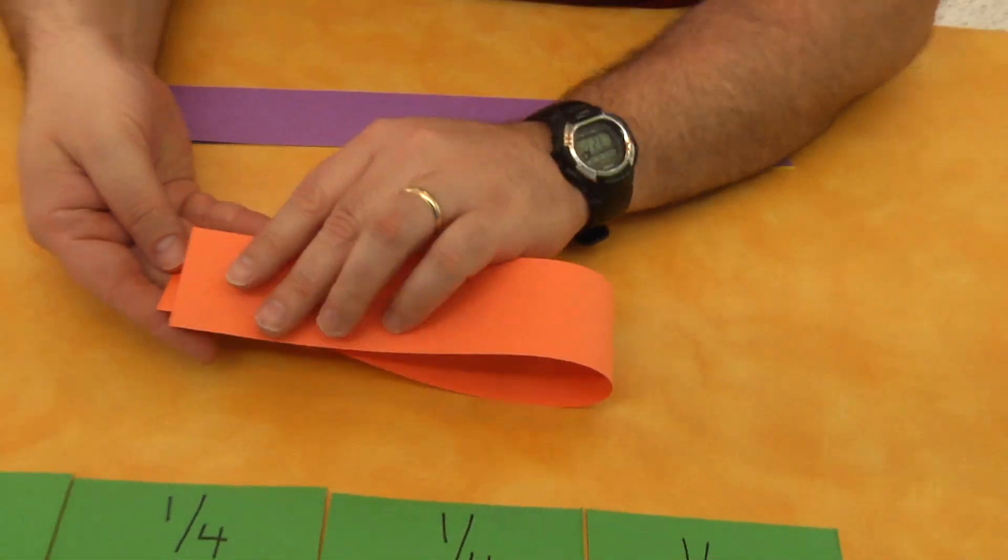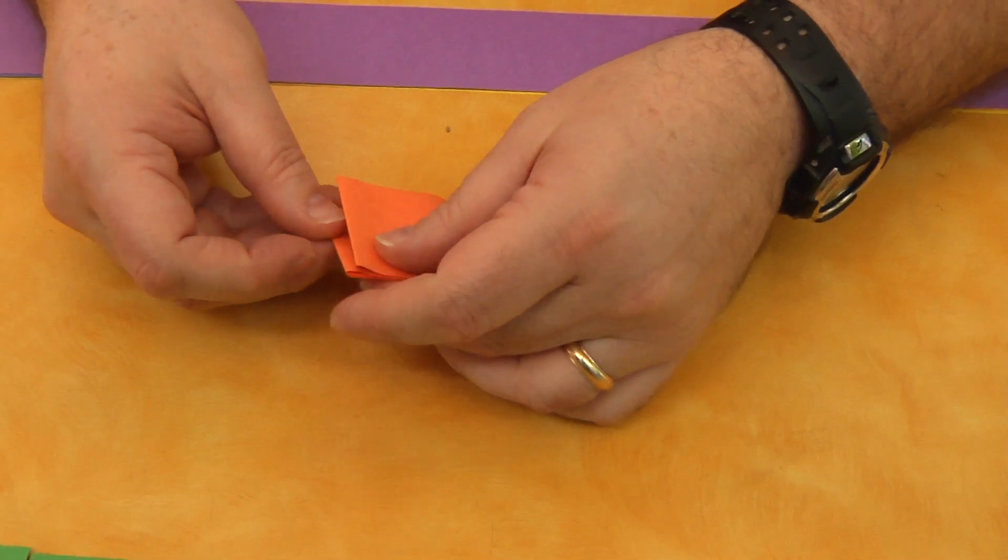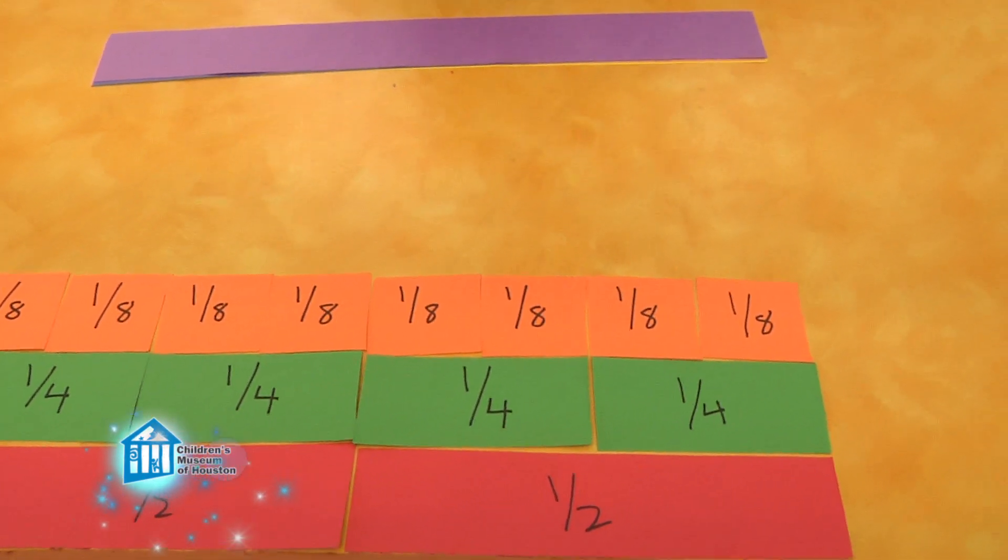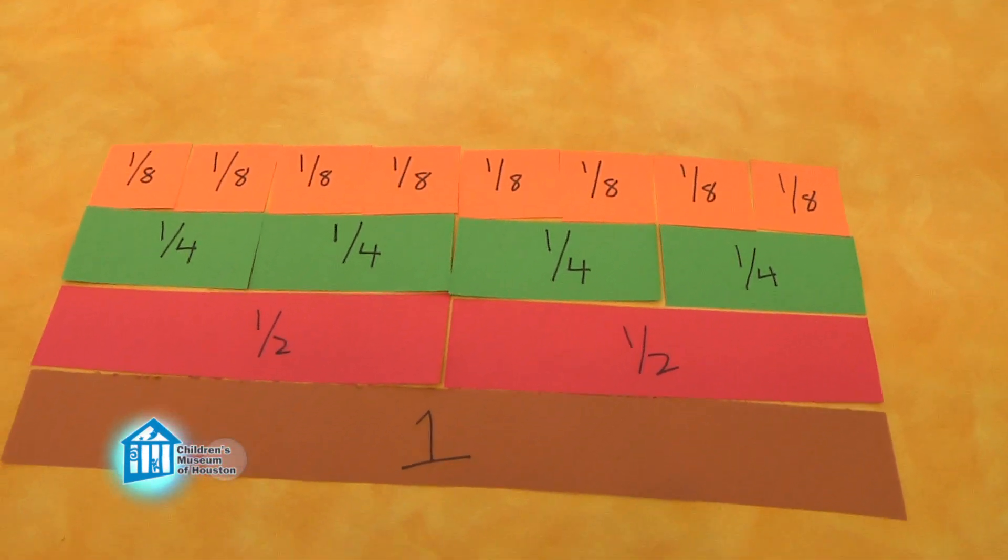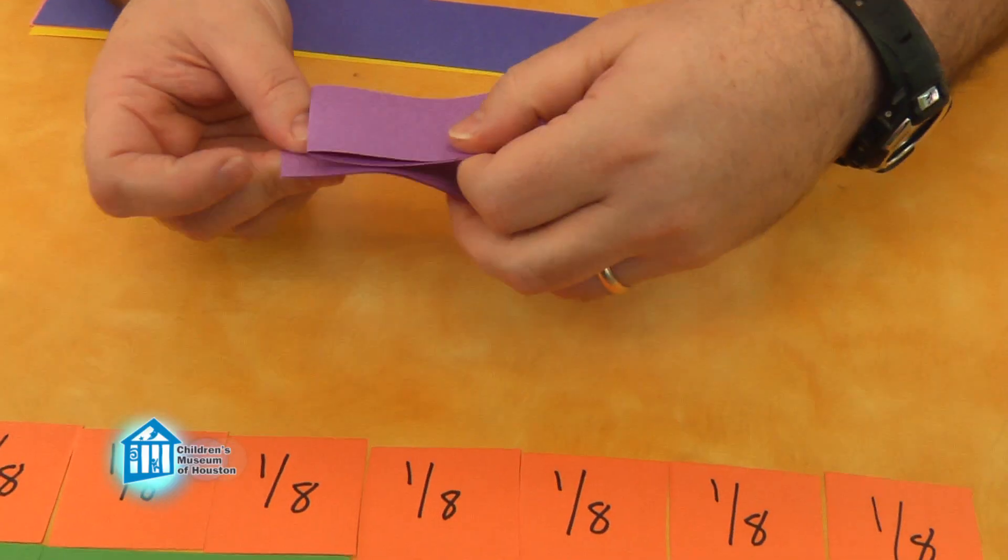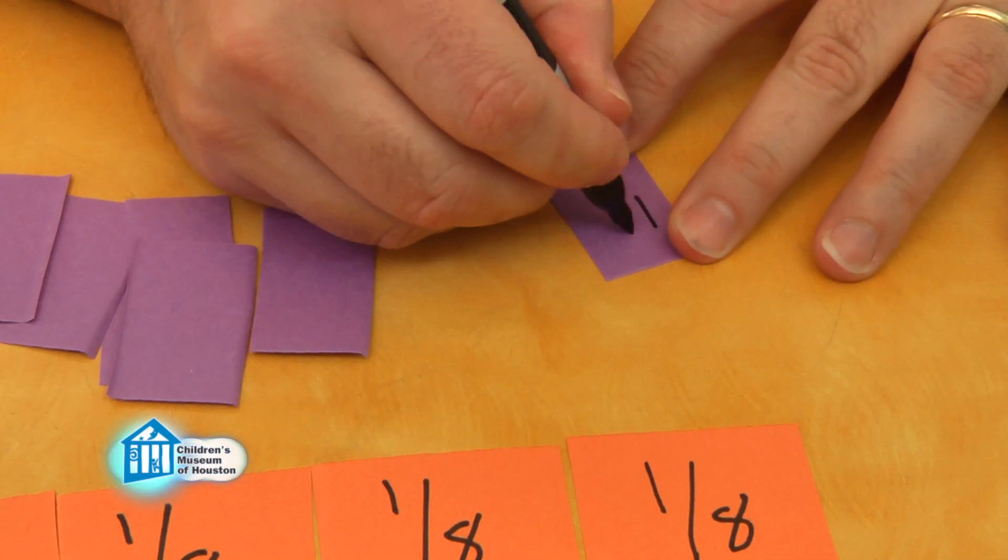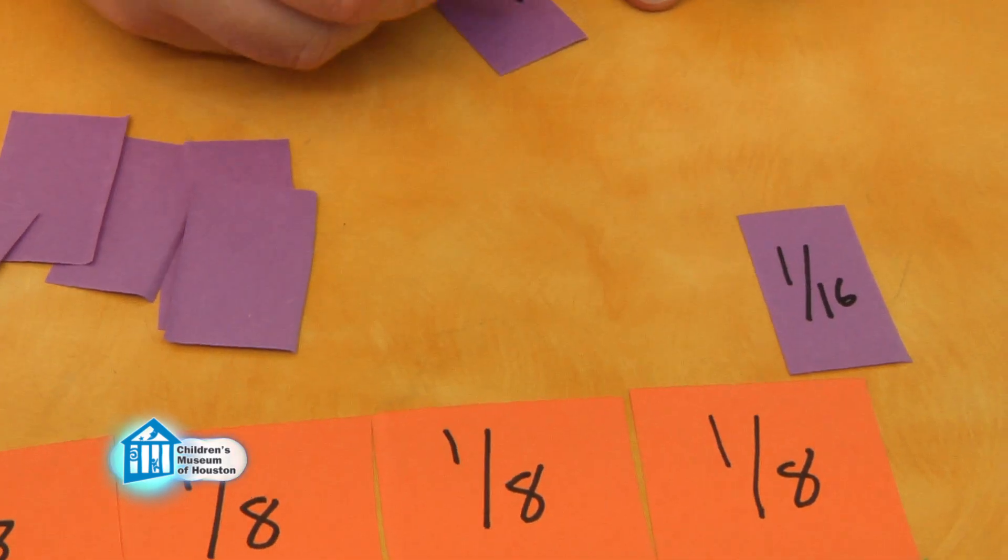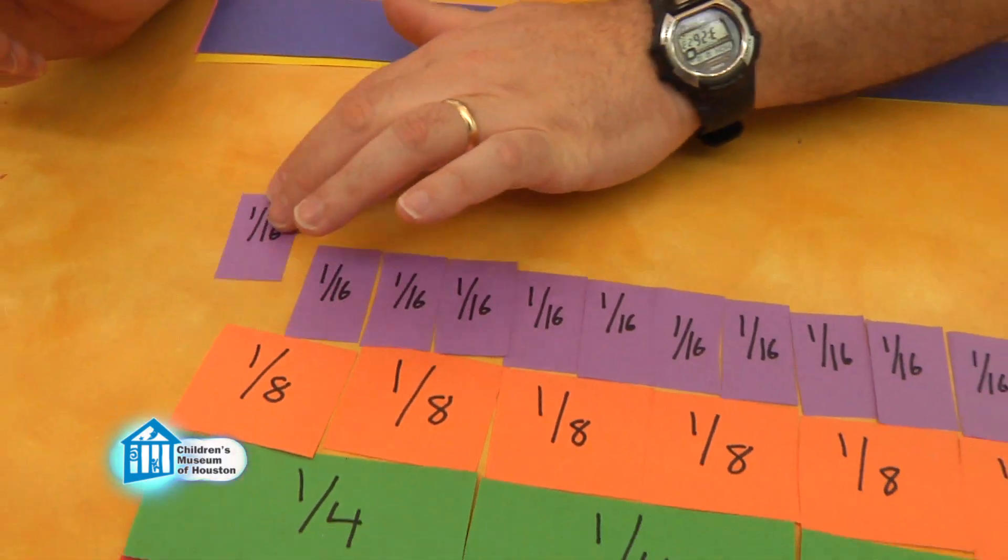So the next will fold in half, then half again, then half again. Eight pieces. So each is one of eight, written as one over eight, one eighth. Excellent. Now fold a strip in half, half again, half again, and half one more time. Sixteen pieces. So each is one of sixteen, written as one over sixteen, one sixteenth.